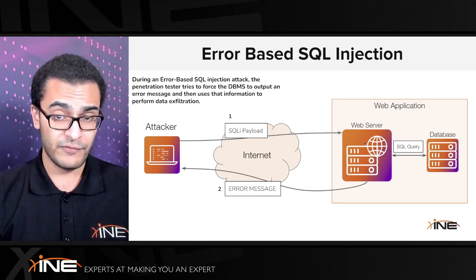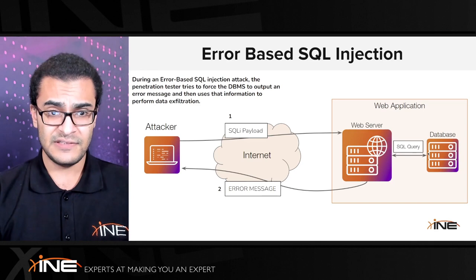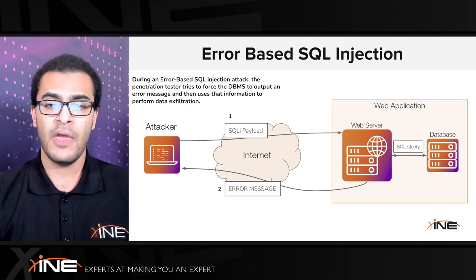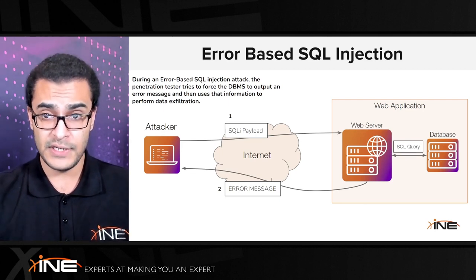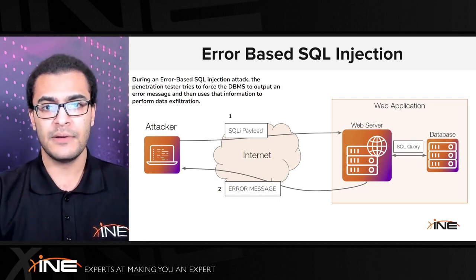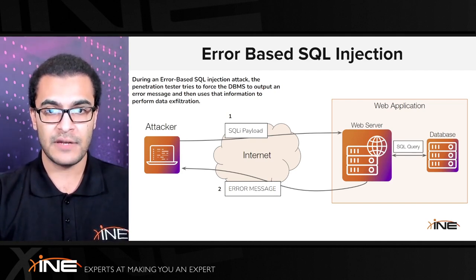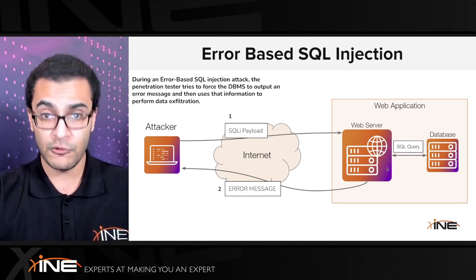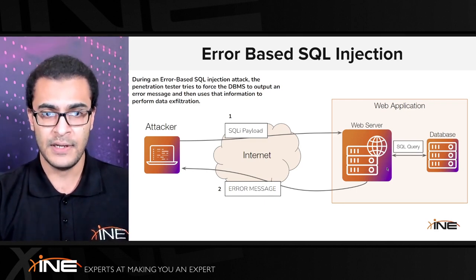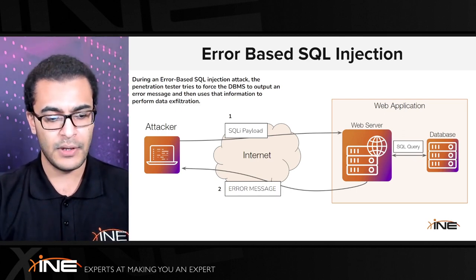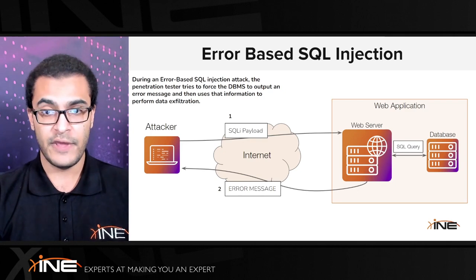The web application returns that error, and depending on the DBMS being used — whether MySQL, PostgreSQL, or Microsoft SQL Server — each DBMS has its own error messages that reveal what database is being used. That firstly confirms the injection vulnerability exists, and you can then use error-based injection to learn more about the backend database, extract data, and follow through with exploitation of the vulnerability.